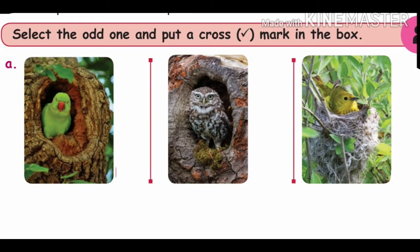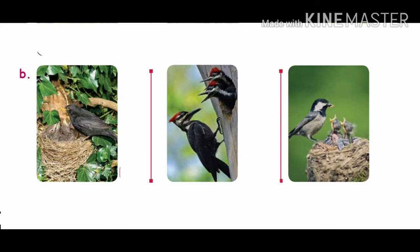Select the odd one and put a cross mark in the box. You can see pictures of birds and their homes. The first group: parrot and owl live in tree trunk hollows, but the other bird is in a nest — so that bird is the odd one. The second group: the woodpecker is the odd one among birds shown with nests.